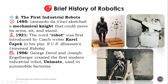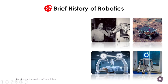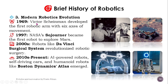In 1956, George Devol and Joseph Engelberger created the first modern industrial robot, Unimate, used in automobile factories. In 1969, Victor Scheinman developed the first robotic arm with six axes of movement.